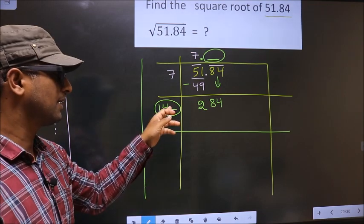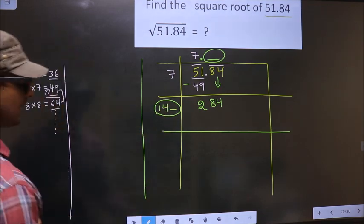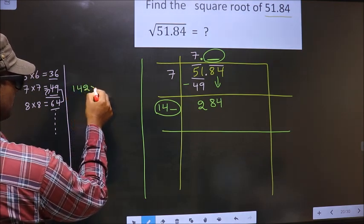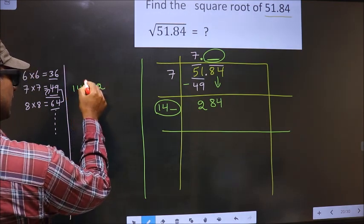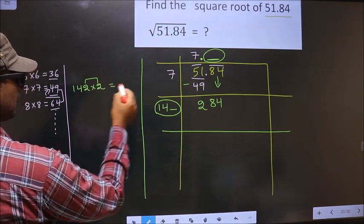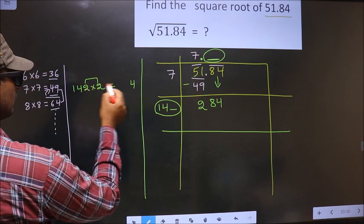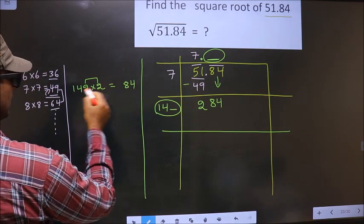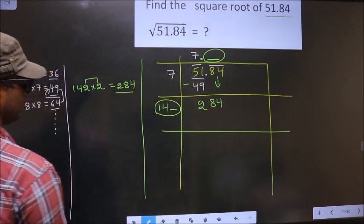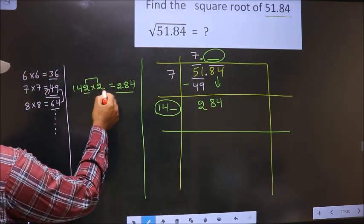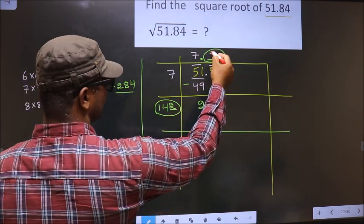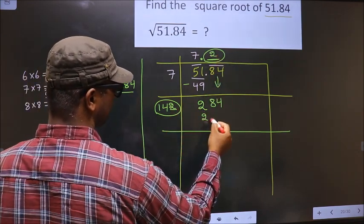So let us find the number here. If I take 2, I should also multiply by 2. These two numbers should be same. So 2 times 2 is 4. 2 times 4 is 8. 2 times 1 is 2. So we got exact 284. So you take 2 here, 2 here and 284 here.